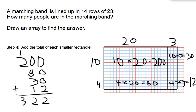Of course, we go back to the problem. How many people are in the marching band? So 322 people are in the marching band. So you can see how drawing an array breaks your factors into smaller numbers, which should make it easier to multiply. And then you add all of the partial products to get your final product or the final answer.